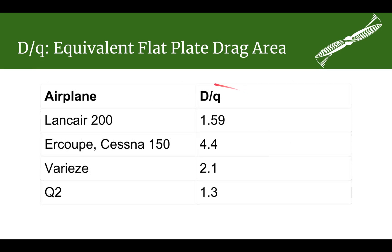Here are some examples of flat plate drag area. A Lance Air 200 is around 1.6. An Ercoupe or a Cessna 150 is around 4.4, which is a pretty high flat plate drag area — the landing gear sticking out in the airstream really increases it quite a bit. The Varieze comes in at 2.1, which is attainable since the nose gear folds up but the main gear is still out in the airstream. It is going to be very difficult to get down to the drag area of the Q2 or the Dragonfly, which have a drag area of about 1.3.